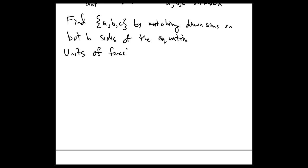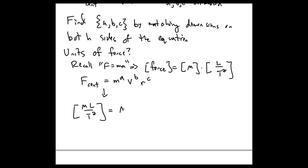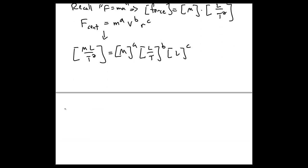If we forgot what the units of force were, we recall F = ma, which tells us the units of force are units of mass times units of length over units of time squared. So we can rewrite our generic guess above in this way, where the dimensions are raised to powers a, b, and c.